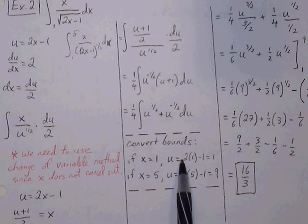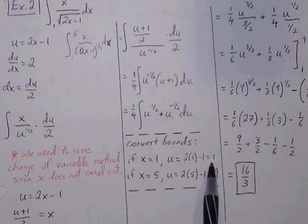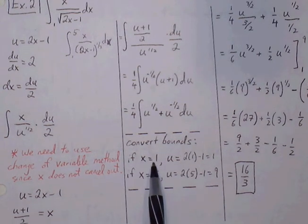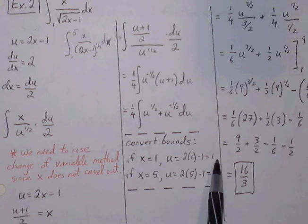we see that our assignment is u is equal to 2x minus 1, so we replace 1 in for x. So 2 times 1 is 2. 2 minus 1 is 1. So our old lower bound is 1, but then when we go through our conversion, our new upper bound is still going to be 1.